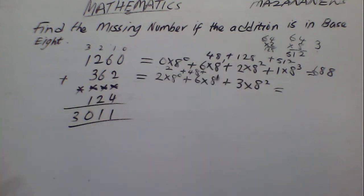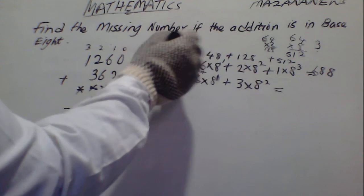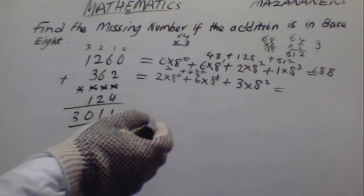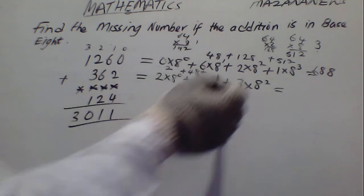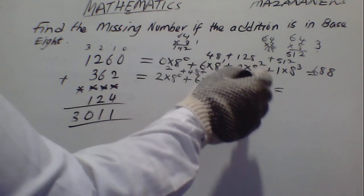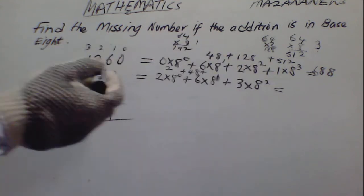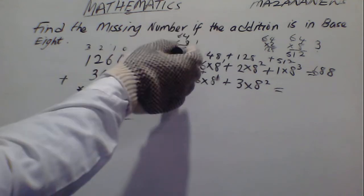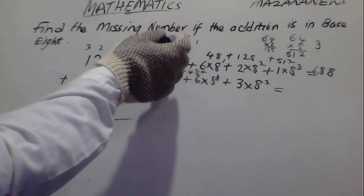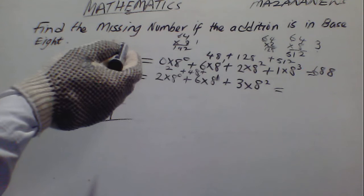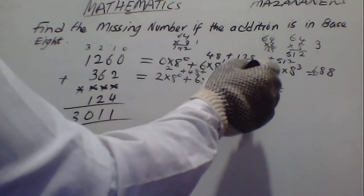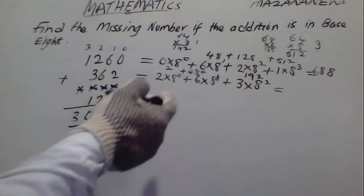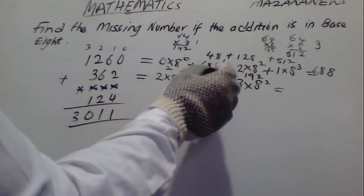If you do 64 times 3, we have 2 carry 1. That gives us 180, then 190. This gives us 2 carry 1. This time we get 18, then 18 plus 1 gives us 192. So this gives us 192.